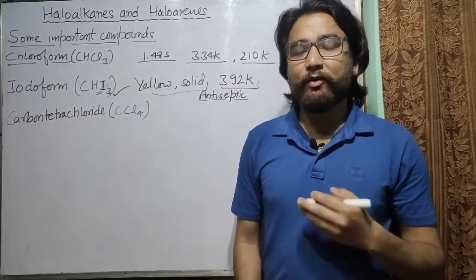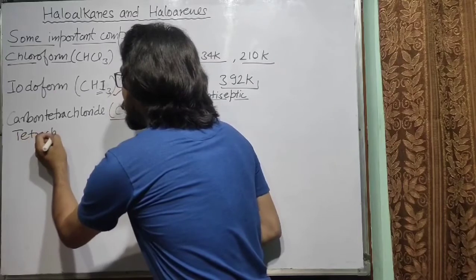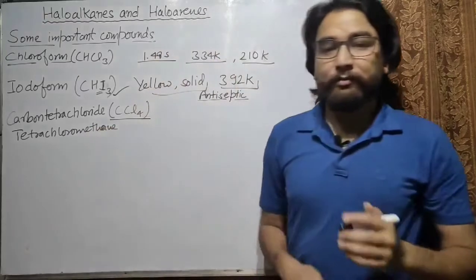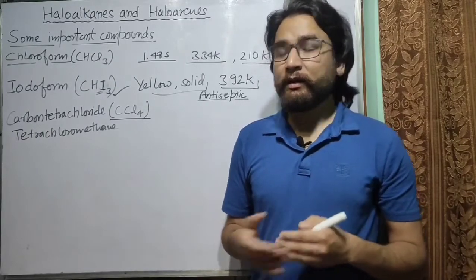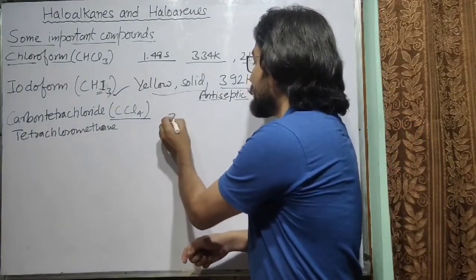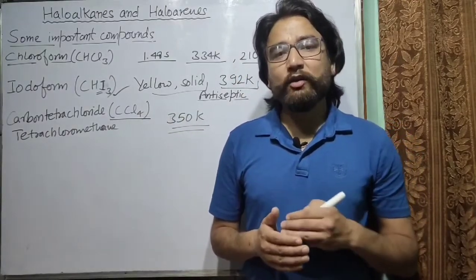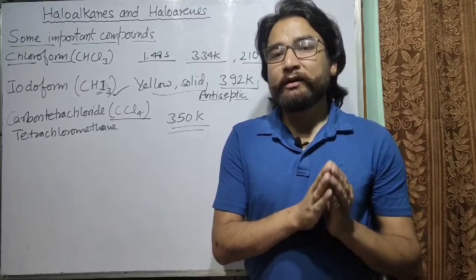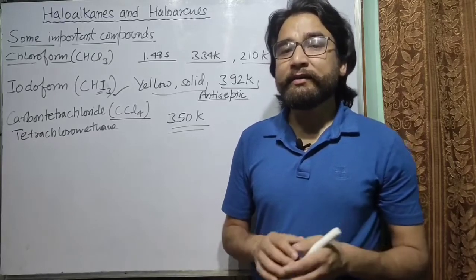The next compound is carbon tetrachloride, CCl4, also called tetrachloromethane. Carbon tetrachloride is a colourless liquid with a very high density. Its boiling point is about 350 Kelvin. Like other haloalkanes, it is insoluble in water but dissolves in organic solvents like alcohols and ethers. It is a very good solvent for fats, oils, and resins.